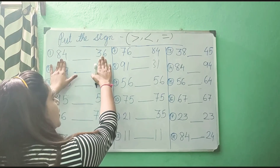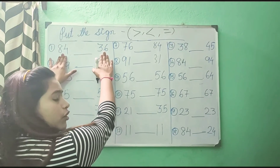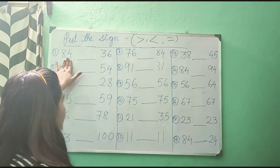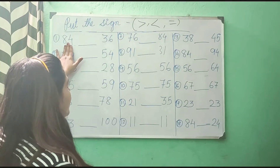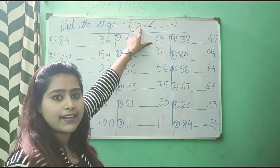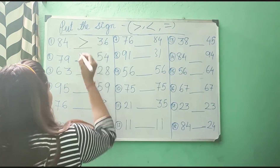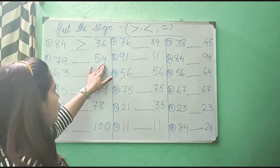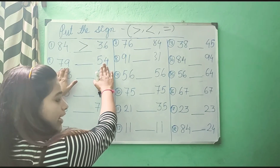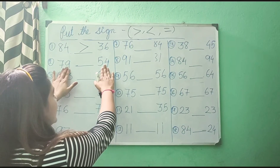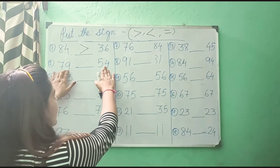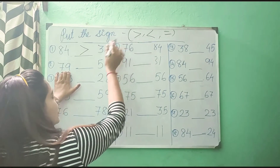Tell me which is the bigger number — 84 or 36? 84 is the bigger number, right? So this is bigger than that number, that is why we will put greater than. Now, 79 and 54 — which is the bigger one? 79, right? So this number is bigger than 54, that is why we will put greater than.